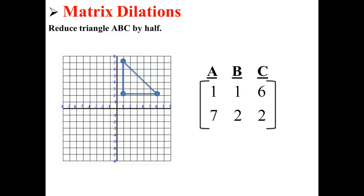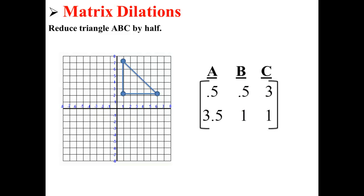Now, let's say that we want to reduce triangle ABC by half. We simply multiply by the constant 1/2. We get a series of new points that are 0.5, 3.5, 0.5, 1, and 3, 1.